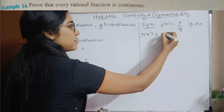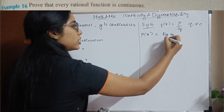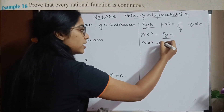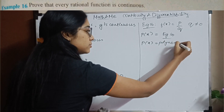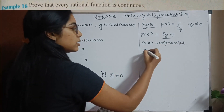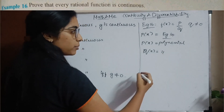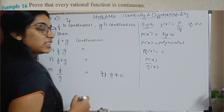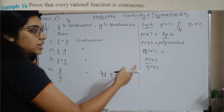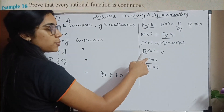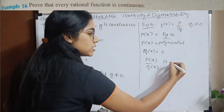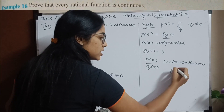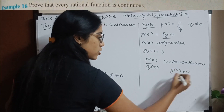From example 14, we saw that a polynomial function is continuous. So if P(X) is a polynomial and Q(X) is also a polynomial, then when you have two continuous functions in the numerator and denominator, the division P/Q is also continuous provided the denominator is not 0. So the rational function is also continuous.